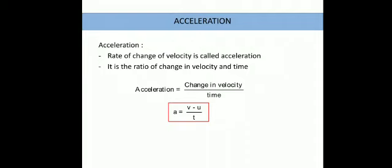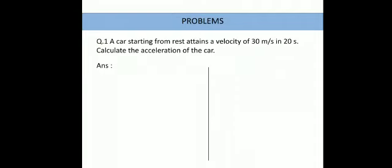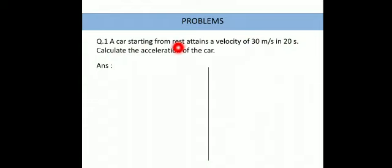Now we will try to understand this with the help of an example problem. A car is starting from rest and attains a velocity of 30 meter per second. It took only 20 seconds for the car to attain that speed. Initially, the car was at rest — it was stationary, not moving. So the initial velocity of the car was 0 meter per second.